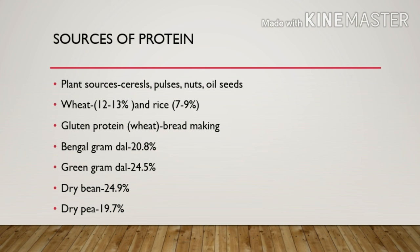Plant sources of protein include cereals, pulses, nuts, and oil seeds. Wheat contains around 11% protein, and rice contains 7.9% protein. Gluten is the protein found in wheat, used in bread-making. Bengal gram dal contains 20.8%, green gram dal 24.5%, dry bean 24.9%, and dry pea 19.7% protein.